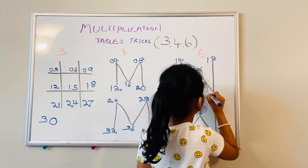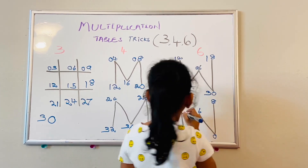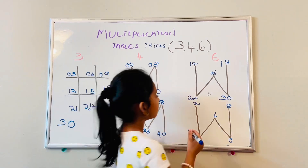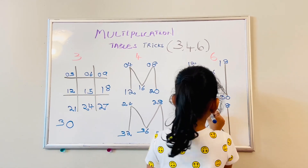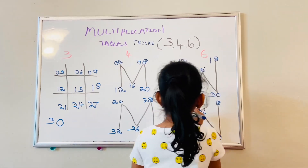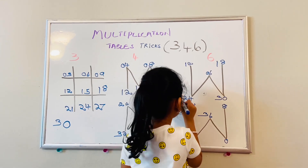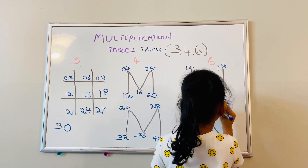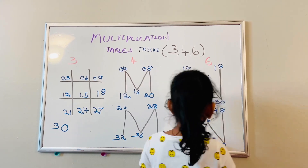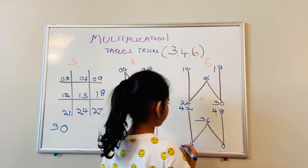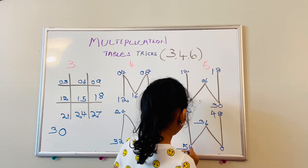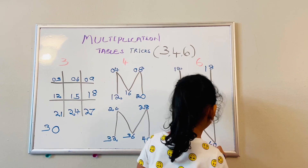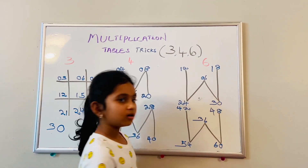So three, continue from the sixth. Then three. Then write four, four. Then write five. Then six, because it came to the last of the pattern.